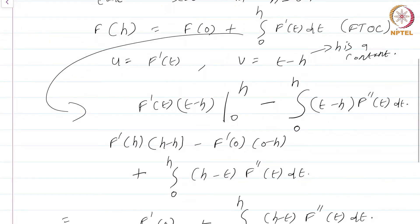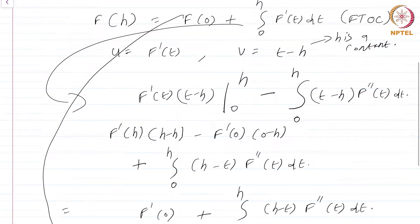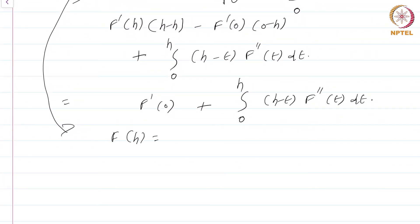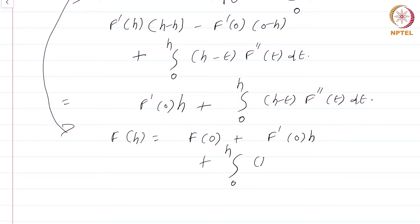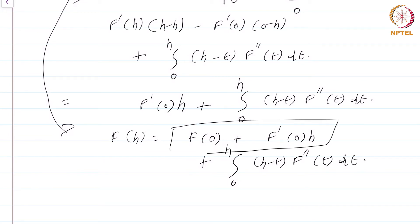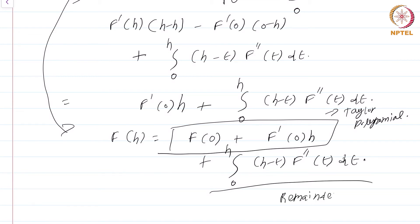So far so good. Substituting back into the original expression, we get f(h) = f(0) + f'(0)·h + integral from 0 to h of (h − t)·f''(t) dt. We have obtained a Taylor polynomial — the f(0) + f'(0)·h part — and this integral is the remainder term.